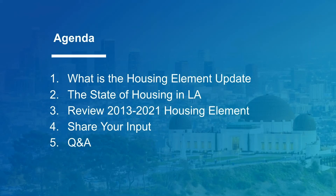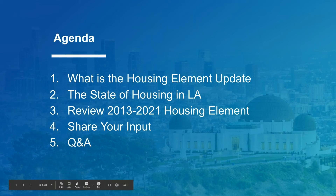This brings us to our agenda today. First, we'll provide an overview of the housing element update for 2021 to 2029 and what the Plan to House LA update process will look like. We'll also provide background on the current state of housing in LA and review the current 2013–2021 housing element. Before we wrap up, we'll share a platform where you can offer more detailed input. After reviewing these elements, we'll reserve time for a Q&A session with staff from the Department of City Planning and HCID.